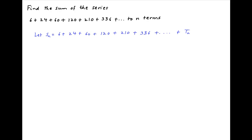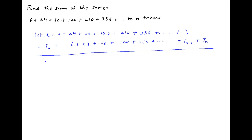Let the nth term of this series be Tn. Now rewriting this series and staggering all the terms by one position. Now take the difference of the two series. The left hand side is equal to 0 and the right hand side is equal to 6 plus 18 plus 36 plus 60 plus 90 plus 126 plus and so on.